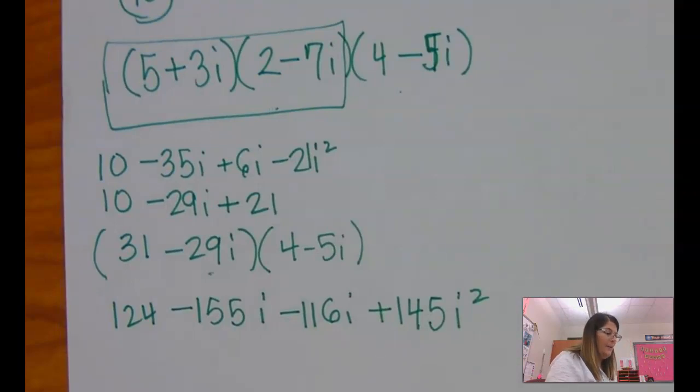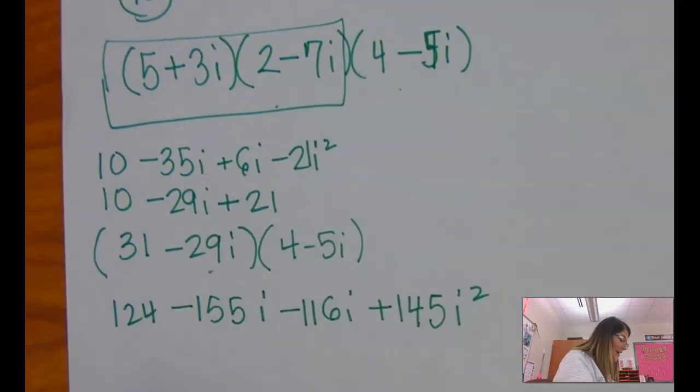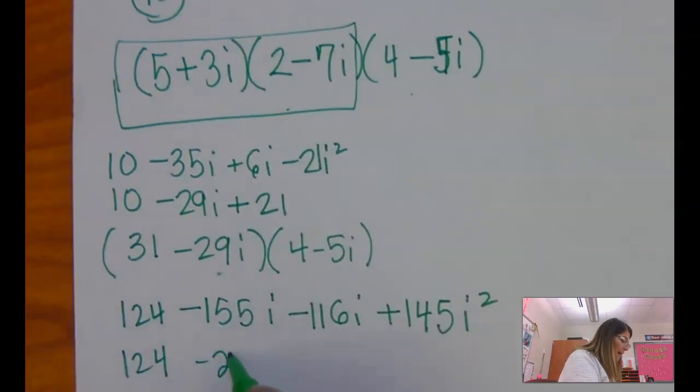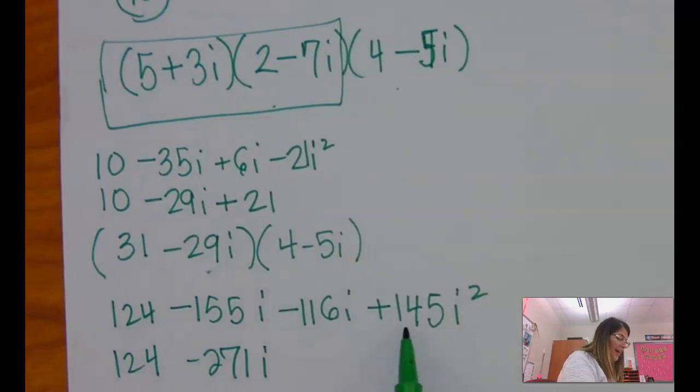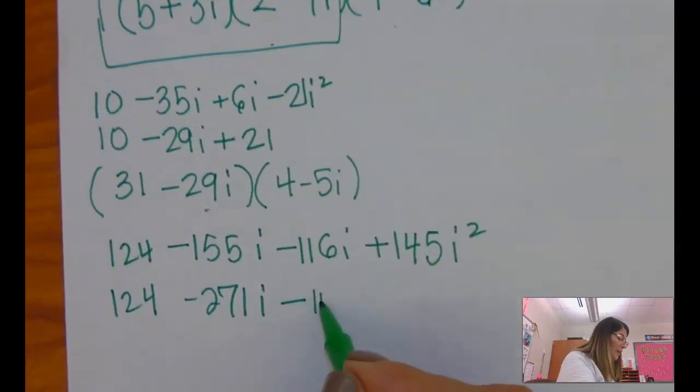So treat the i kind of like a variable for a while until the end. Now I've got to combine my like terms. So I have 124 minus 271i. Now this i squared gets replaced with a negative 1, so it becomes minus 145.